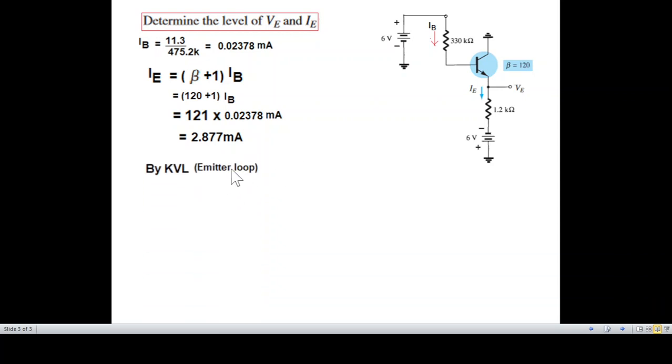And now by KVL into the other loop, right hand side loop. This is IE, we have just marked the polarity. Going from here positive six and minus sign for this drop minus IE 1.2 and plus VE.